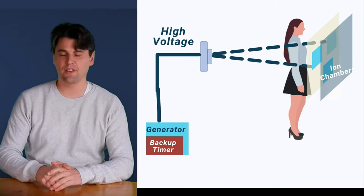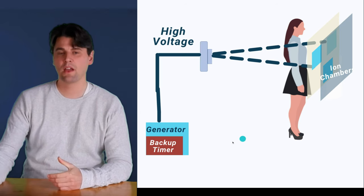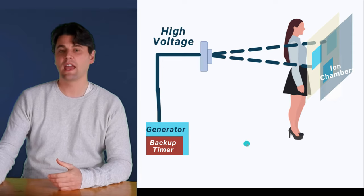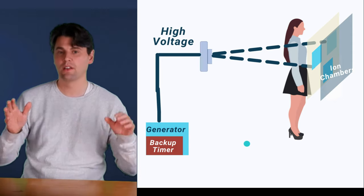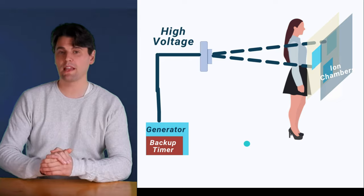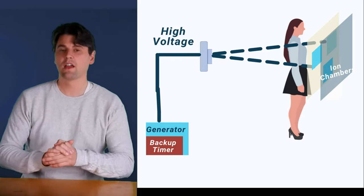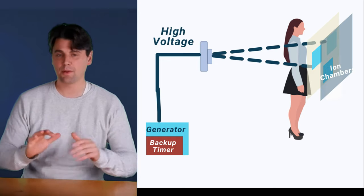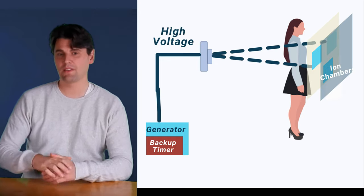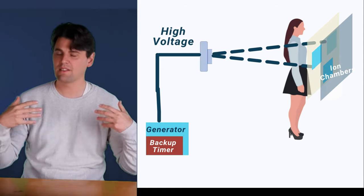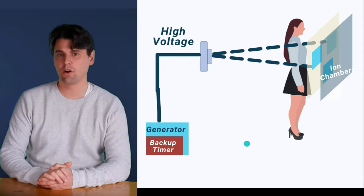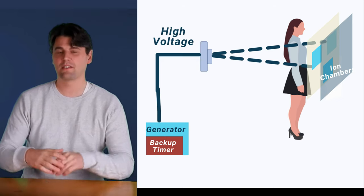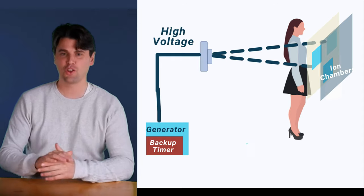First off, we want to talk about safety. With any automated exposure control system you're going to have a backup timer. Within the generator itself, if the exposure control system is not working properly, there is a backup timer such that the x-rays will not be on for an infinite amount of time. The backup timer on some systems can be set, on others it's fixed, but it's there as a fallback to prevent significant overexposure in the case that the automated exposure system is not working or not being used properly.